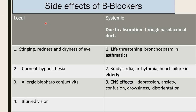Local side effects of beta blockers include stinging, redness and tightness of the eye, corneal hypoesthesia, allergic lipoconjunctivitis, and blurred vision. Systemic side effects due to absorption through the nasolacrimal duct include life-threatening bronchospasm in asthmatic patients, bradycardia, arrhythmia, heart failure in elderly patients, and CNS effects like depression, anxiety, confusion, drowsiness, and disorientation.